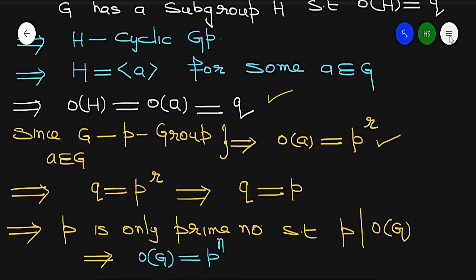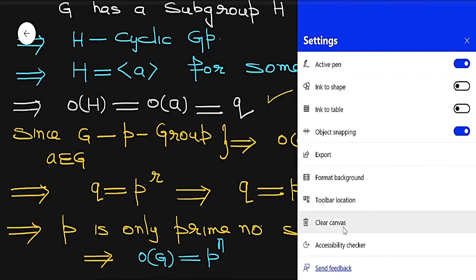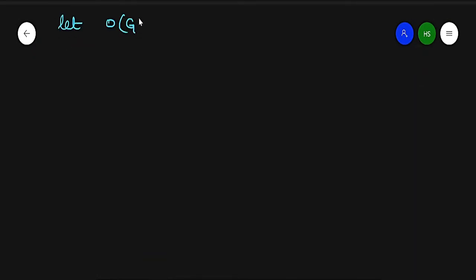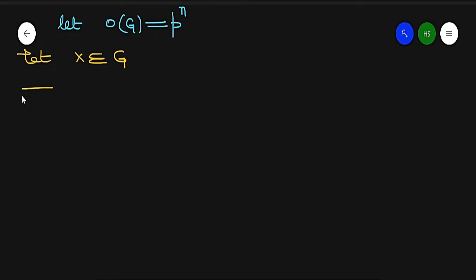Now for the second part. Let order of G equal P raised to power n — this is given. We want to prove that G is a P-group. We take any element x from group G.